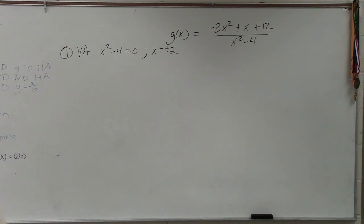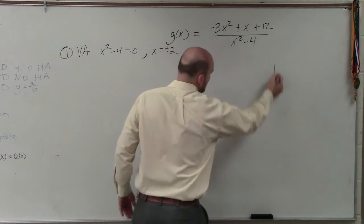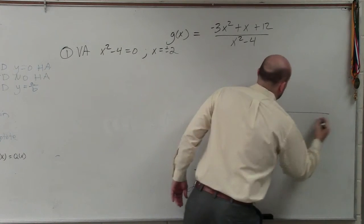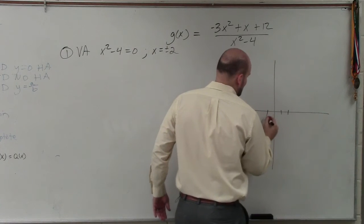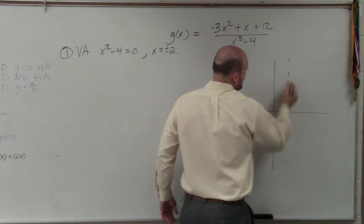Once I found my vertical asymptotes first, when going for my graph, I'm going to go over to positive 2 and negative 2, and I'm going to create dashed lines.